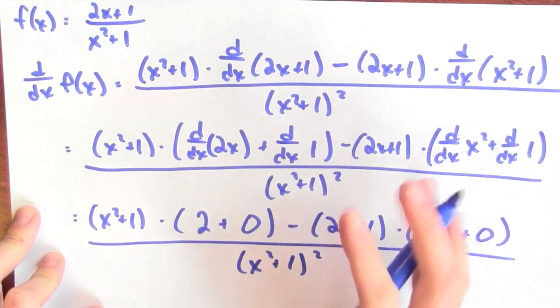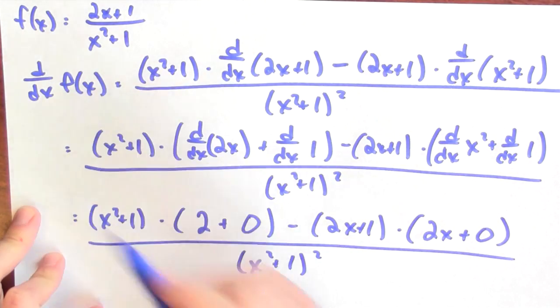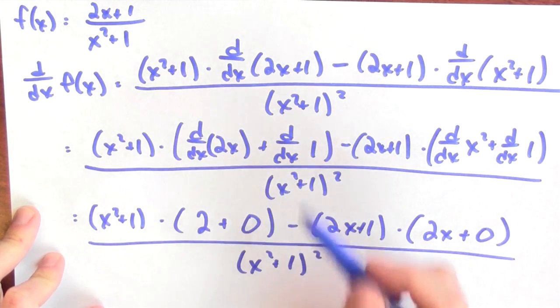So, this is the derivative of the original function that we're considering. There's no more differentiation to be done. And we did it using the quotient rule. We've done a ton of work on differentiation so far. We can differentiate sums, differences, products, now quotients.